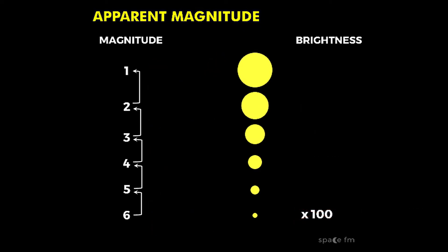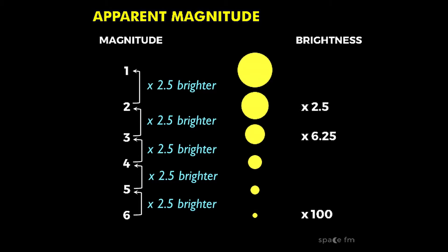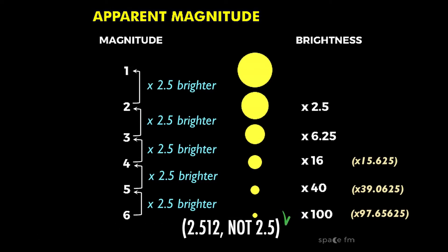So what are these increments actually supposed to be? Well, if we multiplied 1 by 2.5 and then 2.5 again for a total of 5 times, we'll have ended up matching the brightness ratio of 1 to 2.5 to 6.25 to just about 16, almost 40, and almost 100. In reality, the more accurate number to multiply by is 2.512, but 2.5 is good enough for us to move forward with the idea that stars of varying magnitudes have specific brightness ratios to one another.